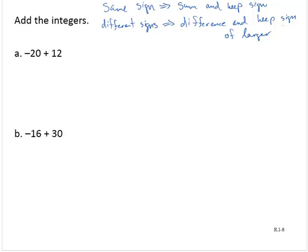So let's look at exercise A. We have negative 20 plus 12. I see different signs - negative 20 and I'm adding to that positive 12. Different signs, so difference.